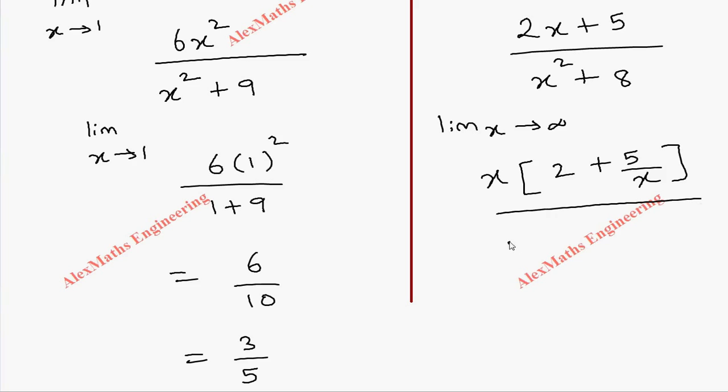And in the denominator, the highest power which can take common is x square. This will become 1 after taking common and this becomes 8 by x square.